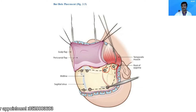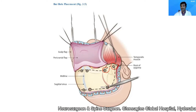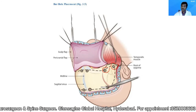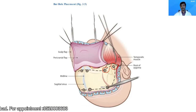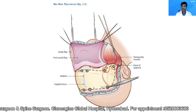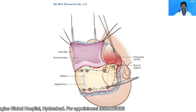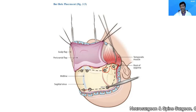Using a Penfield dissector, separate the dura mater at the level of the burr holes and also beyond them as far as possible. When separating the dura between the two paramedian burr holes, be very careful — if the dissector enters the superior sagittal sinus, it can cause catastrophic bleeding.